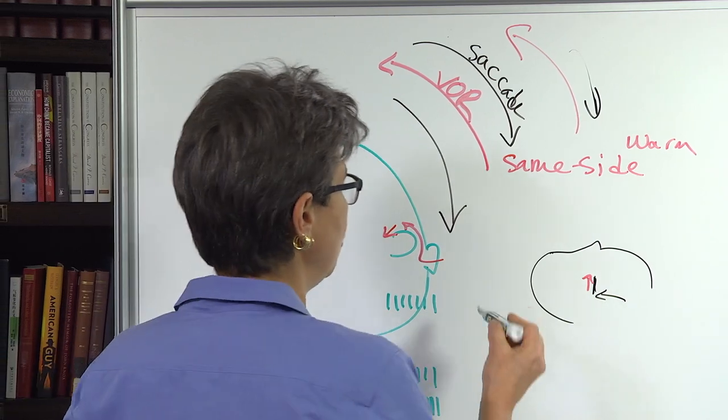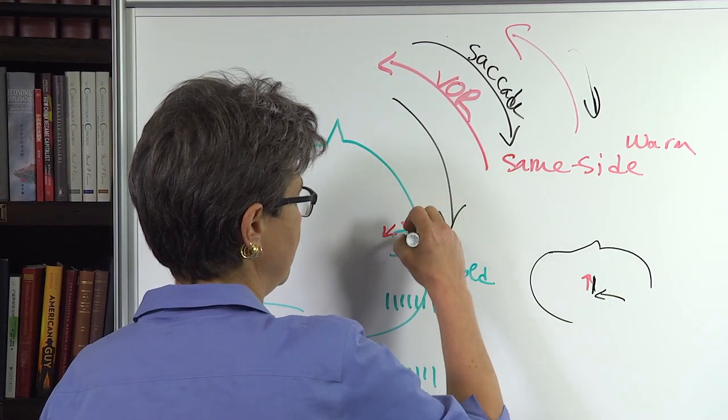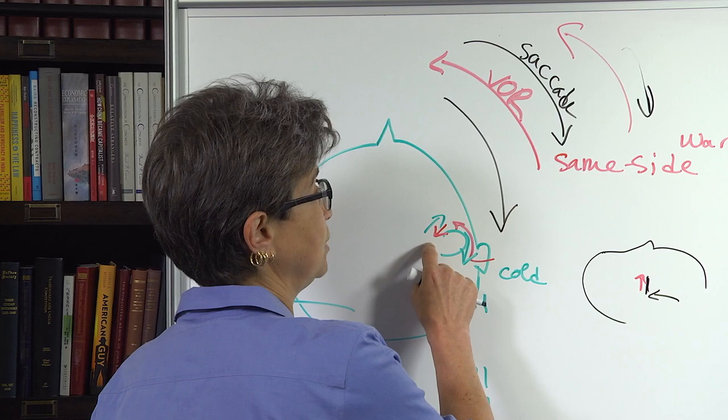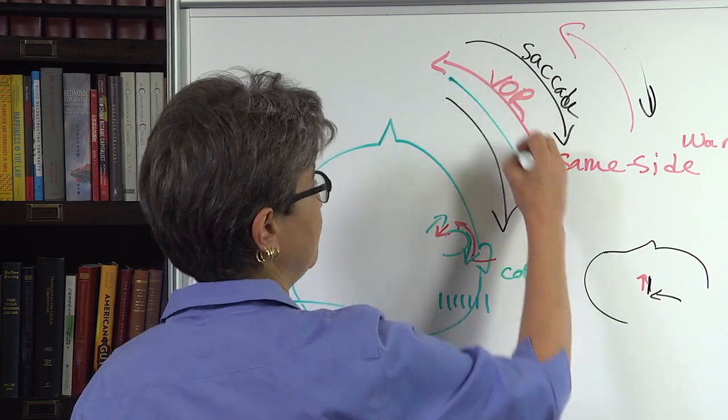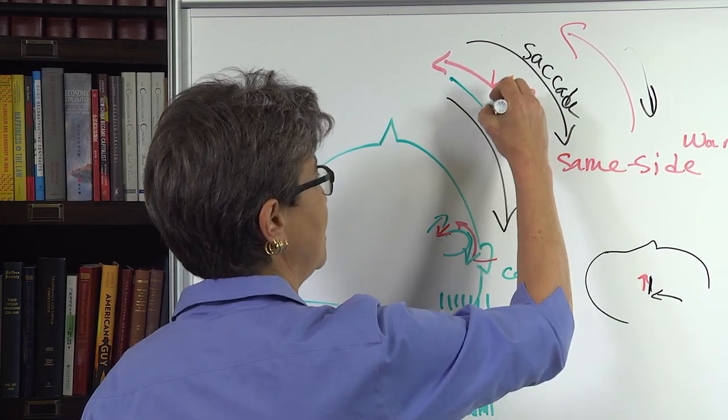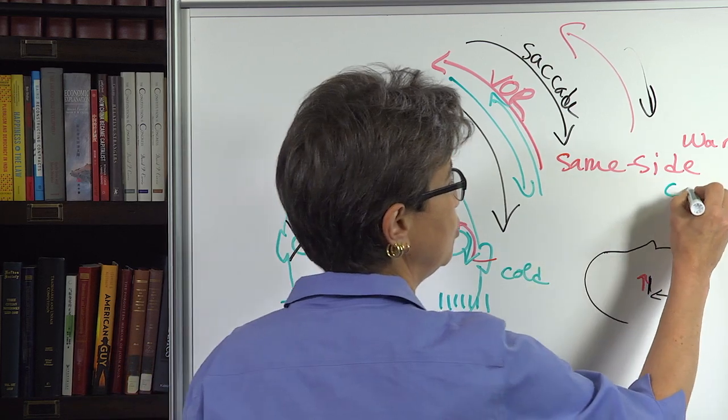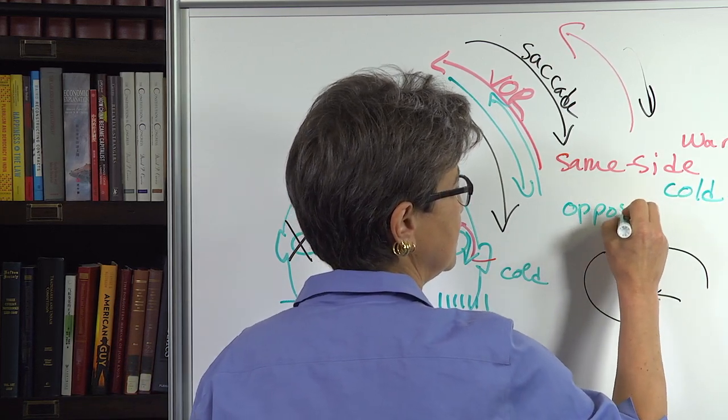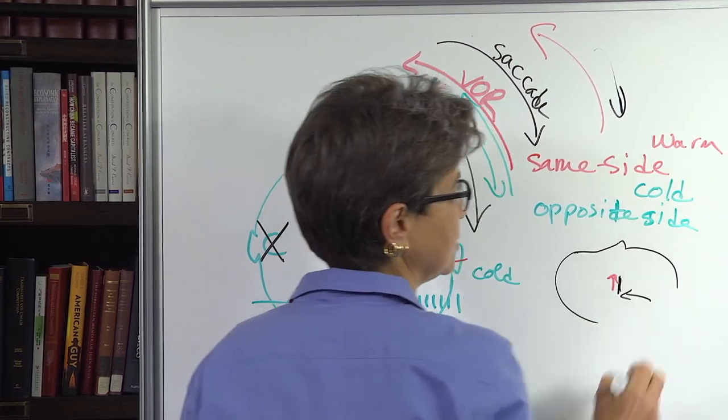In contrast, if we put in cold water, now the endolymph is going to tend to move down. That's going to move in the anti-preferred direction. And you're going to get an inhibition on this side, which is going to produce a VOR in this direction, a saccade in that direction. So with cold water, you have an opposite side nystagmus, opposite side nystagmus.